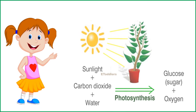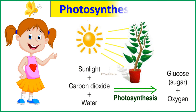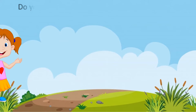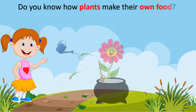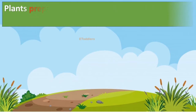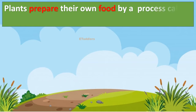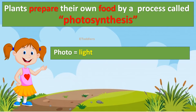Let's learn about the process of photosynthesis. Do you know how plants make their own food? Plants prepare their own food by a process called photosynthesis. Photo means light, and synthesis means putting together.